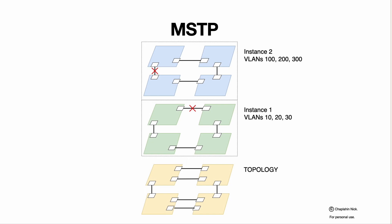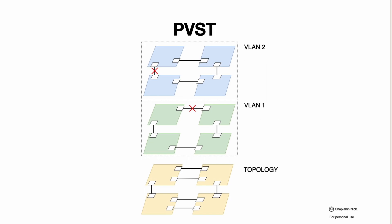PVST, unlike MSTP, makes a slice per VLAN rather than per instance — or in other words, each VLAN is treated as its own instance. So the topology is sliced per VLAN, not per instance. That is the whole difference. That's the simple summary of spanning tree protocols. Have a nice day!